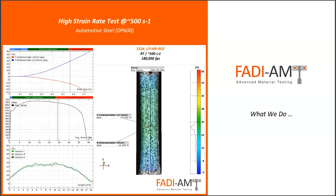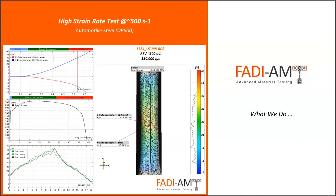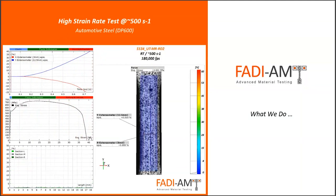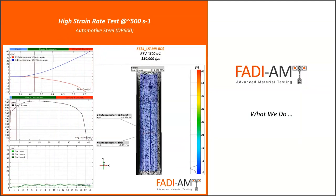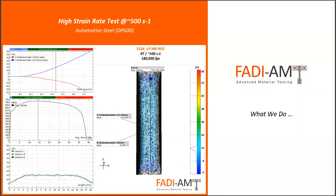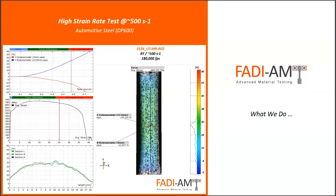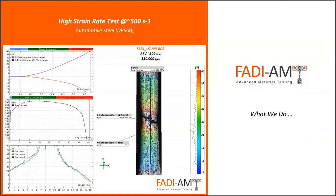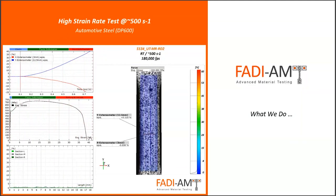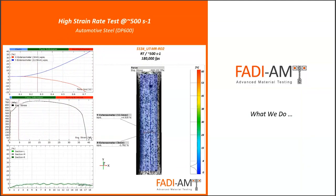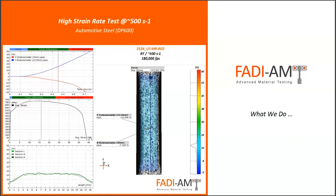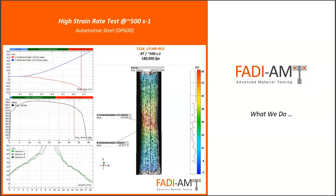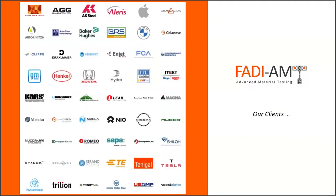Today I picked a high strain rate test that was performed at the upper limit of strain rates needed by the automotive sector, which is roughly speaking 500 strains per second for a DP 600, a typical steel. As you can see, this is the type of results that we show — a video that shows material deformation all the way to failure with good correlation. This is a DIC video that shows good correlation all the way to the end of the test, despite the fact that this is a very challenging test given the strain rate.